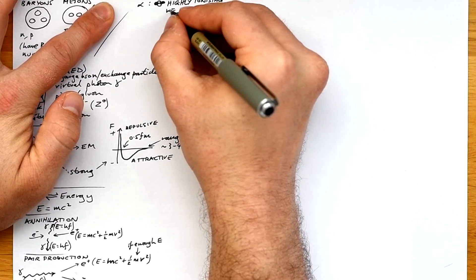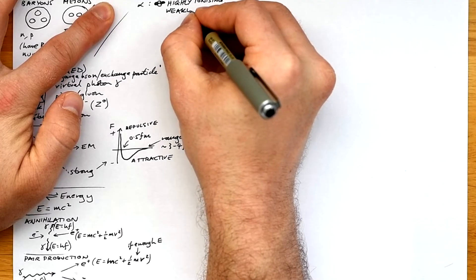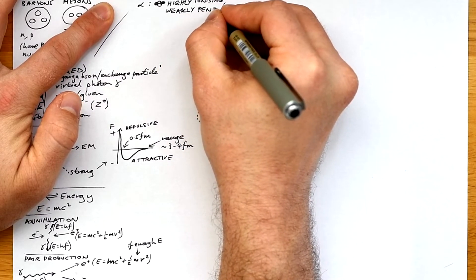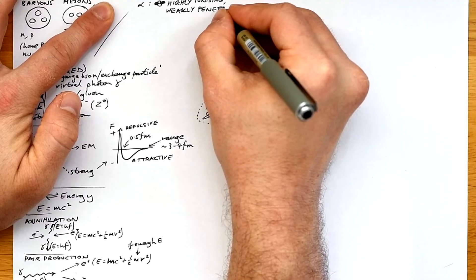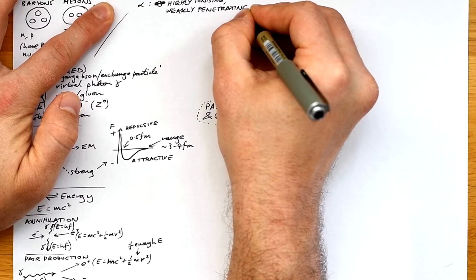An alpha particle is a helium nucleus, two protons and two neutrons. It's highly ionizing, mostly because it's very heavy, but it's weakly penetrating. It's stopped by a piece of paper or a few centimeters of air.